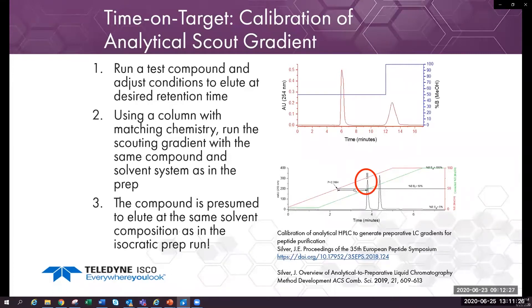Delta-A is the time difference between the program gradient and the apparent gradient. Any change to the scouting gradient or analytical instrument just needs a new run with the model compound to determine the new apparent gradient delay and is very simple.